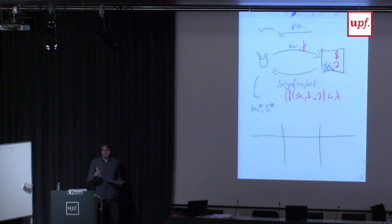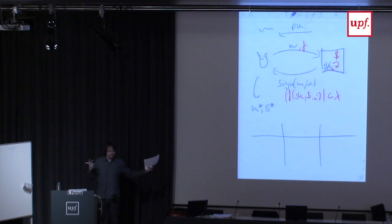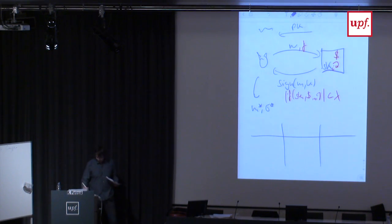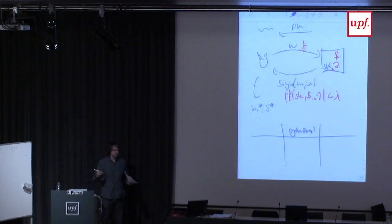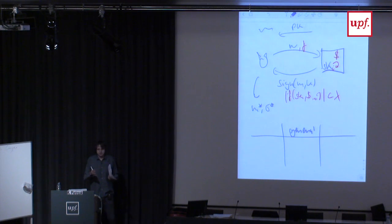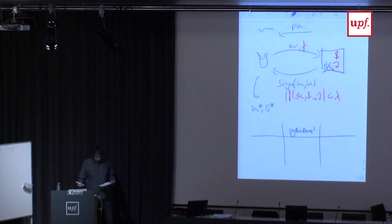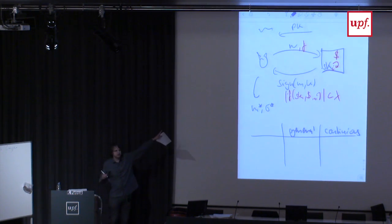The two aspects of leakage resilience: first, leakage should be general — F should be any efficiently computable function, just bounded in capacity, not in type. Second, it should be continuous: the adversary can choose a fresh F with every query, so the total amount of leakage is not a priori bounded — it's bounded per round, but he can accumulate any polynomial amount of leakage.